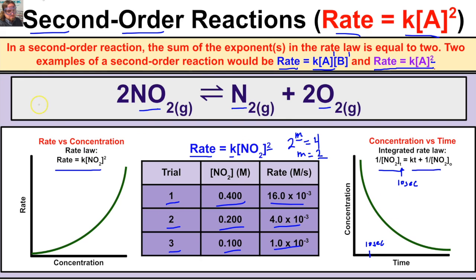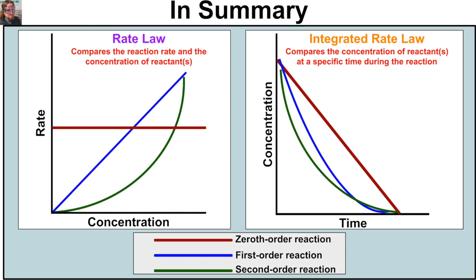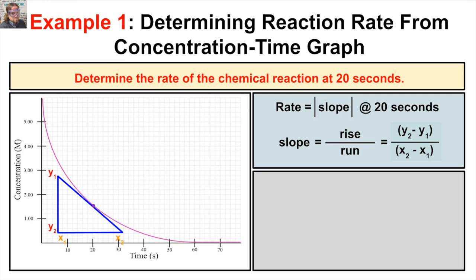In summary, the rate law allows you to compare the reaction rate and the concentration of reactants, while the integrated rate law allows you to compare the concentration of reactants at a specific time during the reaction. We've put the graphs of zeroth, first, and second order reactions all on the same graph so you can compare what they look like. We've also plotted the integrated rate laws for all three orders together. Let's now take a look at an example.